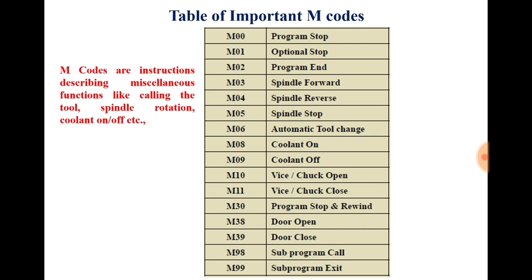The next code is M06 — automatic tool change. Suppose you are performing few operations on the workpiece; for those different operations you will require different tools, and those tools can be called with the code M06. After writing M06 you have to define the location of the cutting tool. If you are working on the milling machine, the tool magazine is used for storing the cutting tools at different locations. Suppose you want to call the cutting tool at location number 3 — then you will write M06 T03, and the cutting tool at location 3 will come into operation.